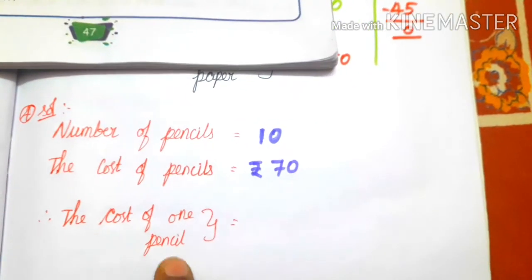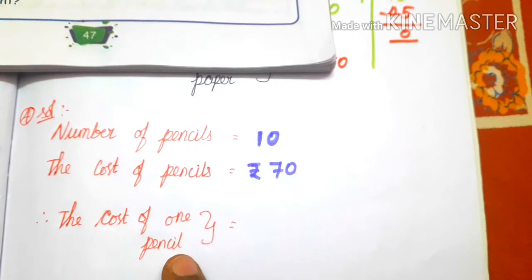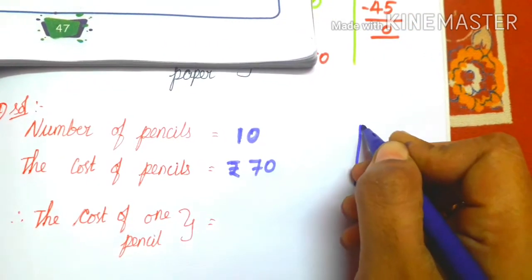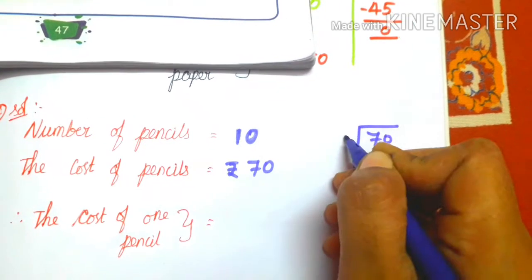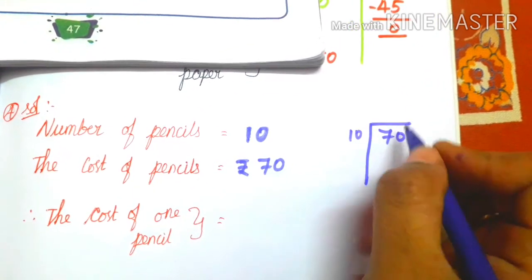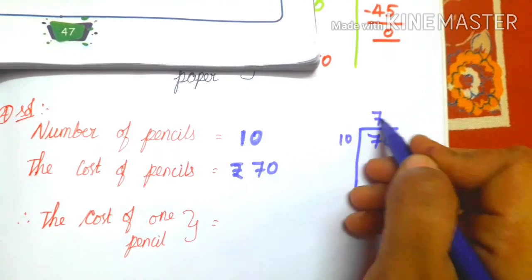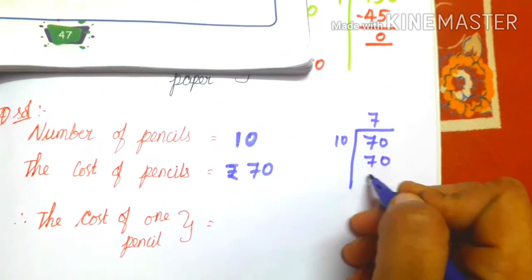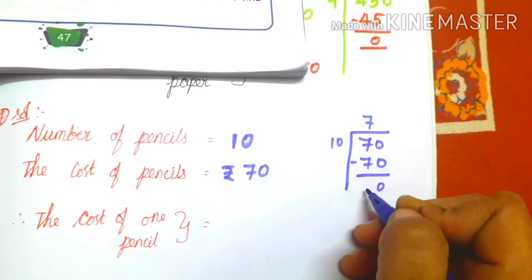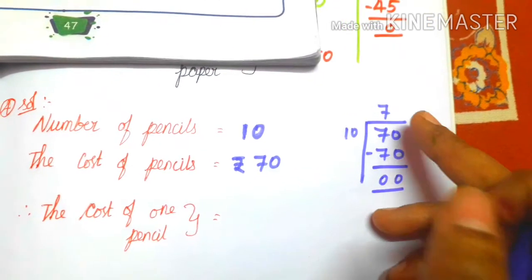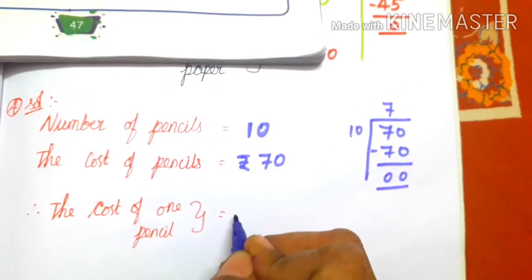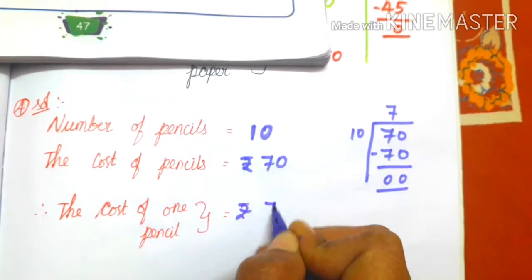Therefore, to find the cost of one pencil, you divide the number: 70 divided by 10. 10 table: 7 tens are 70. Subtract, you get 0. So the answer is 7. Therefore the cost of one pencil equals rupees 7.